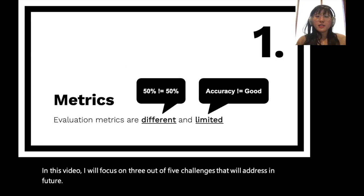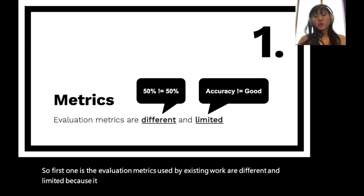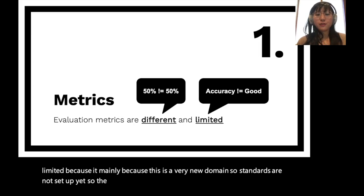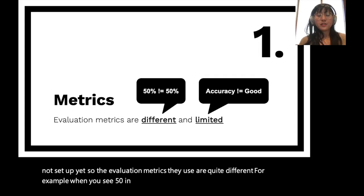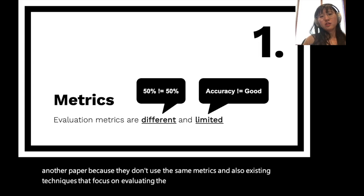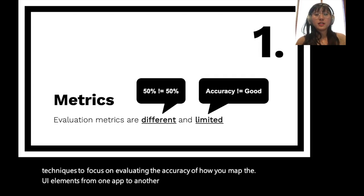The first challenge is that evaluation metrics used by existing work are different and limited. This is mainly because it's a very new domain, so standards are not set up yet. When you see 50% in one paper, it doesn't mean the same 50% in another paper because they don't use the same metrics. Also, existing techniques focus on evaluating the accuracy of UI element mapping from one app to another, but accuracy doesn't really mean the generated test case is truly good.